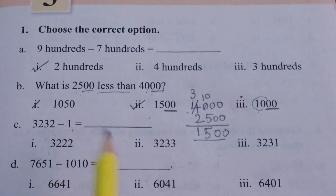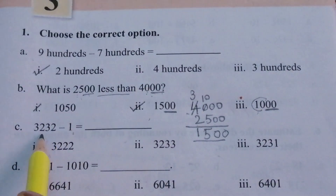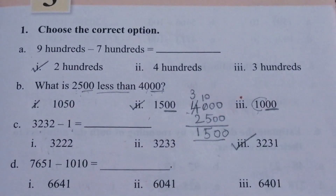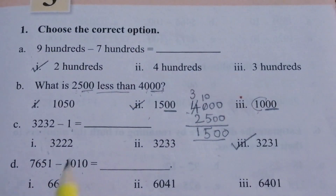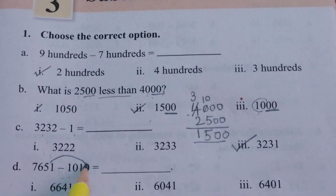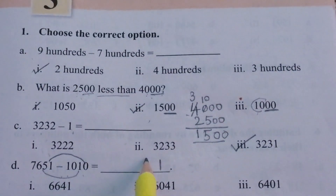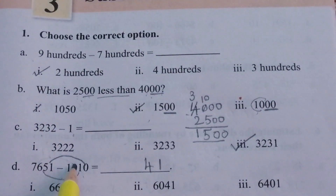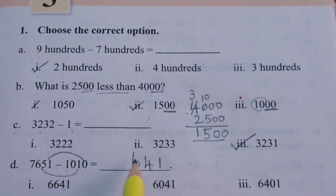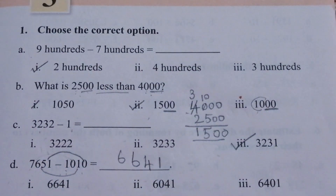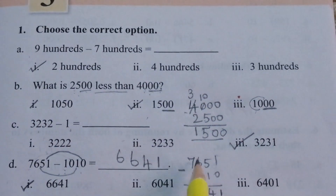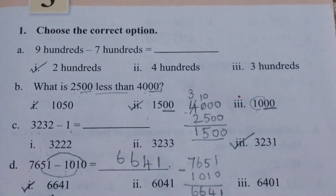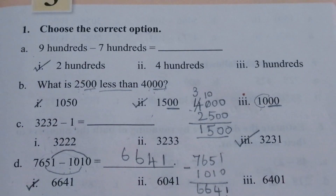D: Seven thousand six hundred fifty-one minus one thousand ten. Subtracting: one minus zero is one, five minus one is four, six minus zero is six, seven minus one is six — so the answer is six thousand six hundred forty-one. You can also write it vertically and subtract: one minus zero is one, five minus one is four, six minus zero is six, seven minus one is six — six thousand six hundred forty-one. Try to practice using shortcut tricks.